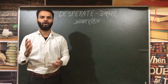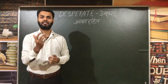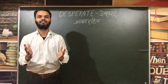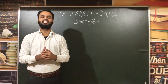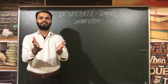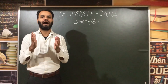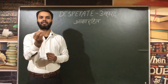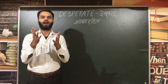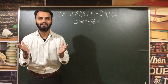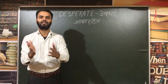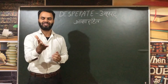Next new word is Desperate, and its meaning is Asha Rahit — hopeless. Friends, let's break Desperate: Desi Parathe. Friends, in today's modern times, we cannot expect to eat desi parathe — we have become asha rahit (hopeless) about that. Desperate means Asha Rahit.